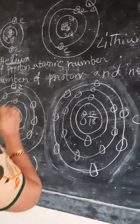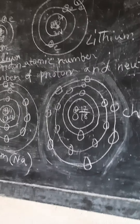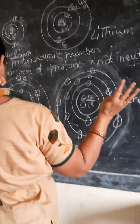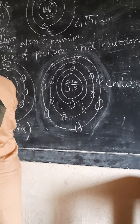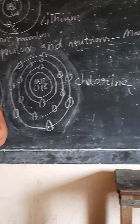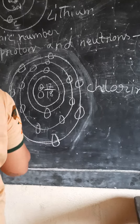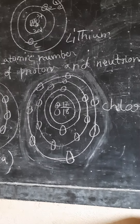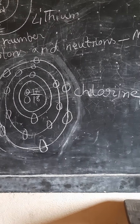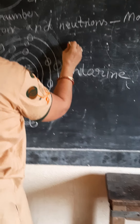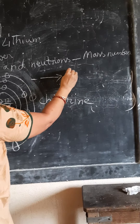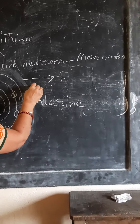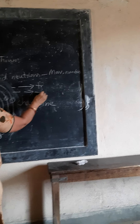Now, an electron can be passed by sodium. When the electron comes from sodium, the negative charge will be passed — sodium becomes positive charge. And if the element receives an electron, the negative charge will be passed and the element becomes negatively charged.